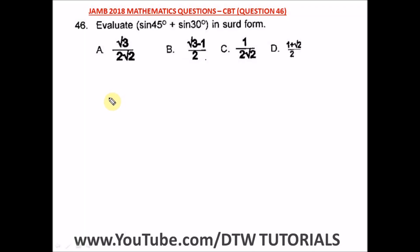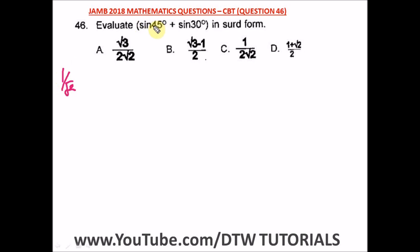Question 46 of the JAMB 2018 mathematics past paper says: evaluate sine 45 plus sine 30. What is sine 45? Sine 45 is one over root two. Before you get into the example, make sure you have your special angles for 30, 60, 45, and 90.